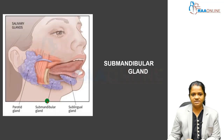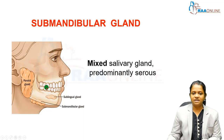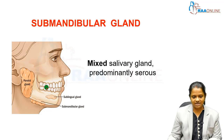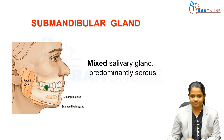The submandibular gland is one of the three main salivary glands in the oral cavity. It is a mixed salivary gland, which is predominantly serous.